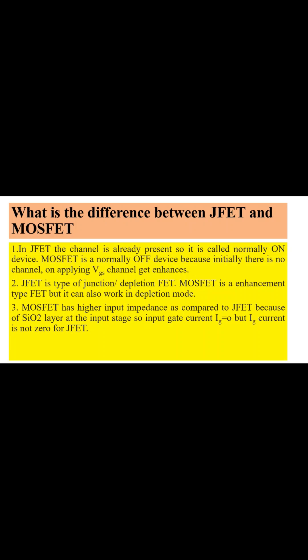MOSFET has higher input impedance as compared to JFET because of the SiO2 layer at the input stage. So the input gate current IG becomes zero, but IG is not zero for JFET.